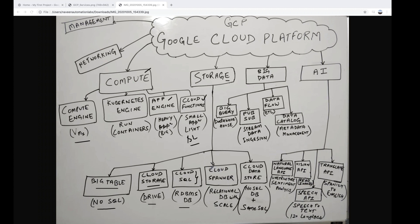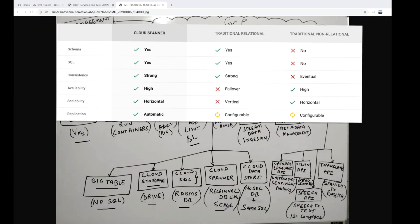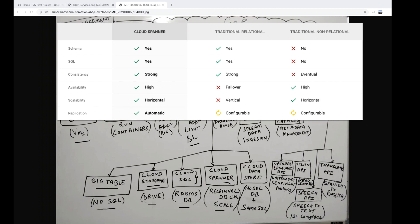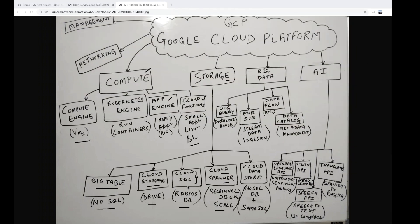Cloud Spanner is the superset of Cloud SQL — it's a relational database with high scalability. If you have a large amount of data and high scale, like an e-commerce application during Thanksgiving or Christmas with many customers and products, Cloud Spanner is the right choice. For small applications, Cloud SQL works fine.